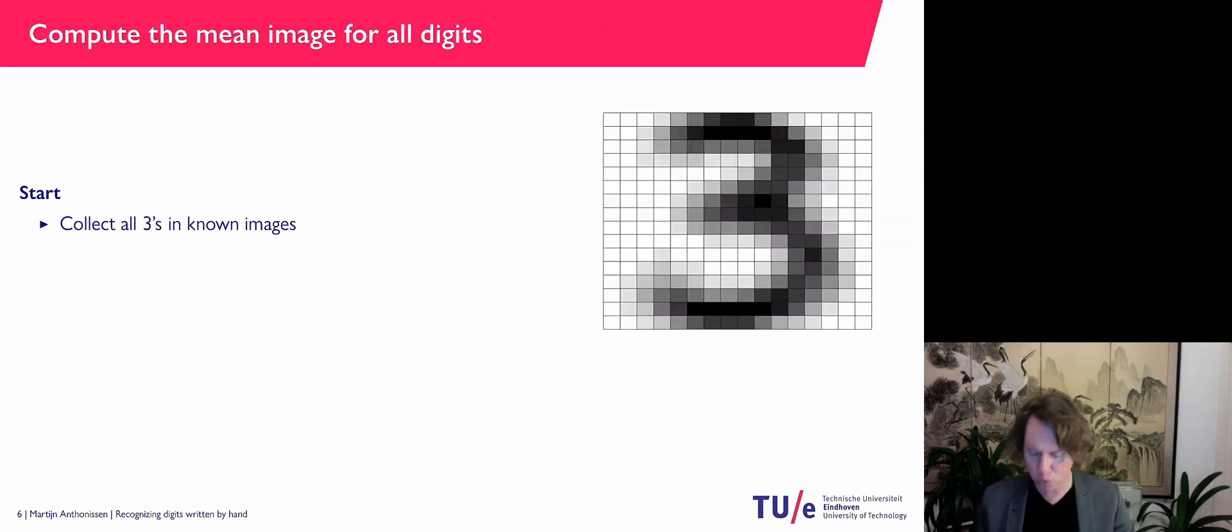So what I'm going to do is I'm going to look in my dataset. I'm going to collect all the threes that are in there. So all the images that represent a three. Since I have vectors, I can add them together.